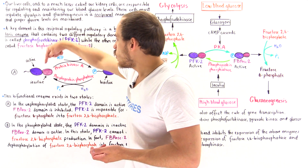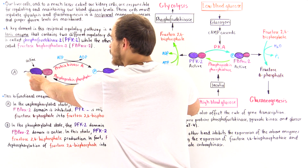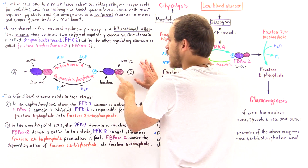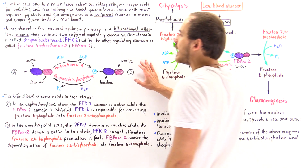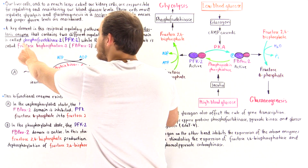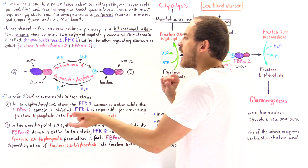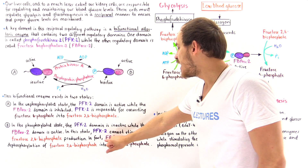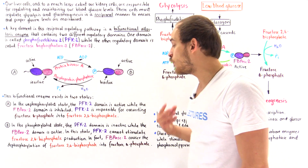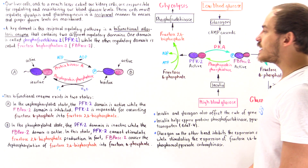In State B, when protein kinase A phosphorylates the serine residue, it deactivates PFK2 while activating FBPase2. The active FBPase2 reverses what PFK2 does — that's why we say they have a reciprocal function. FBPase2 causes the dephosphorylation of fructose-2,6-bisphosphate, removing the phosphoryl group to regenerate fructose-6-phosphate.